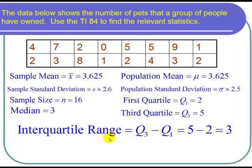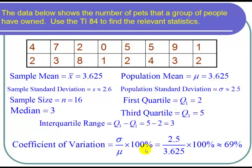And then the interquartile range, sometimes you call that IQR. You take Q3 minus Q1, so that's 5 minus 2, and I get 3. And then the last statistic I want to look at is the coefficient of variation. The formula for that is sigma divided by mu times 100%. Sigma is about 2.5. Mu was 3.625 times 100%. I put that in my calculator, and I get 69%. And I'm done with the problem.